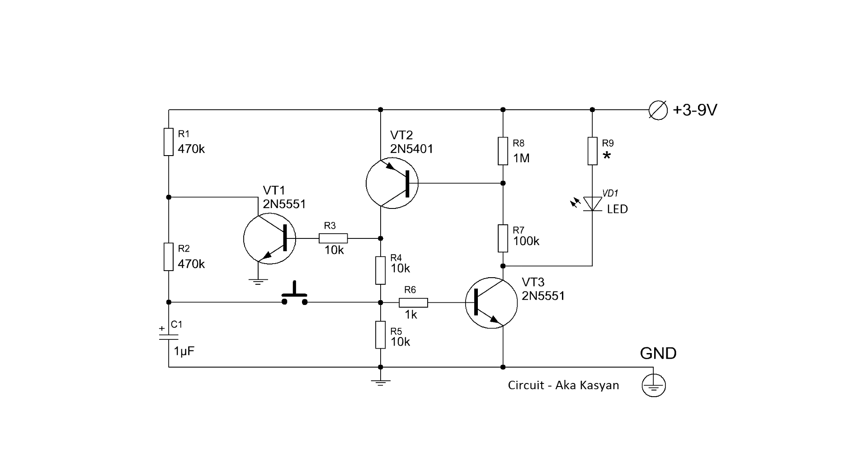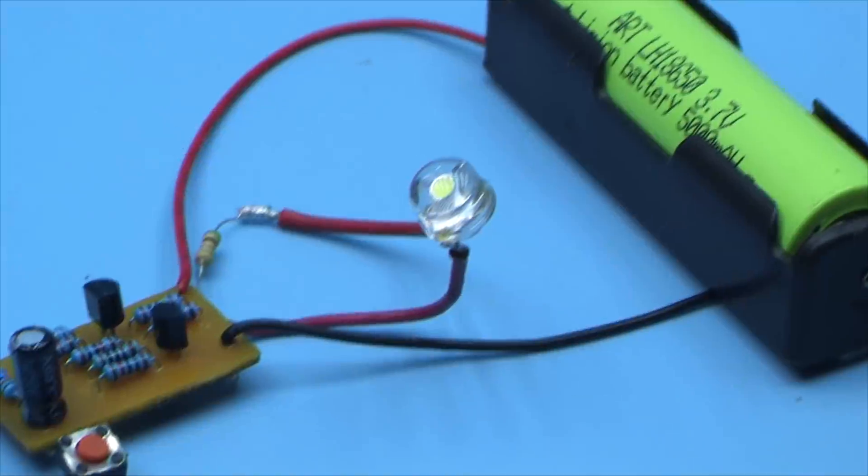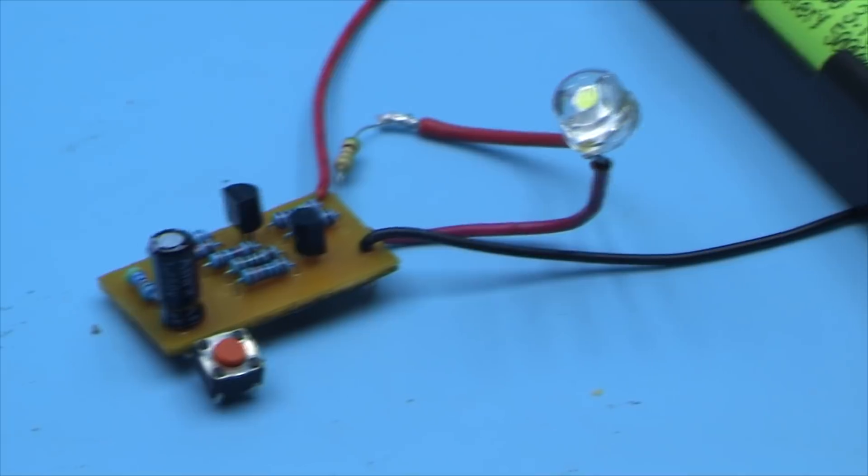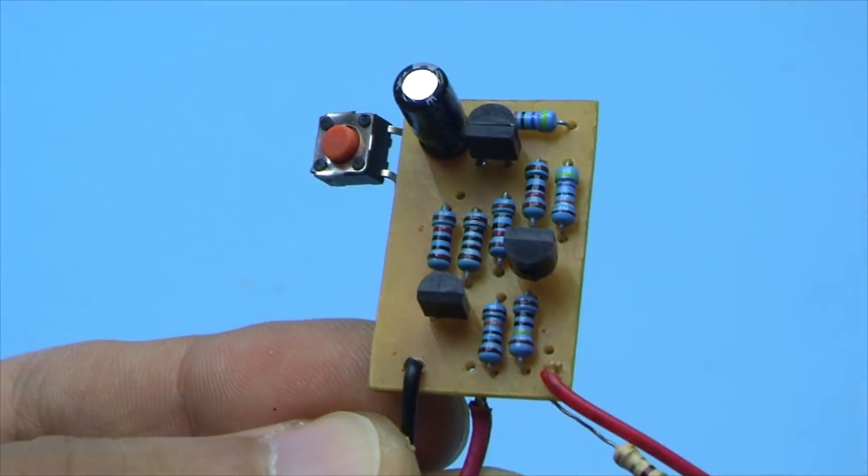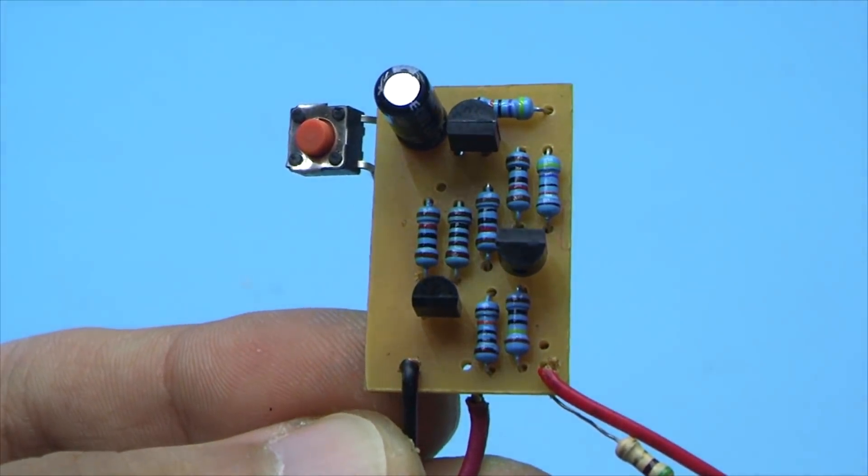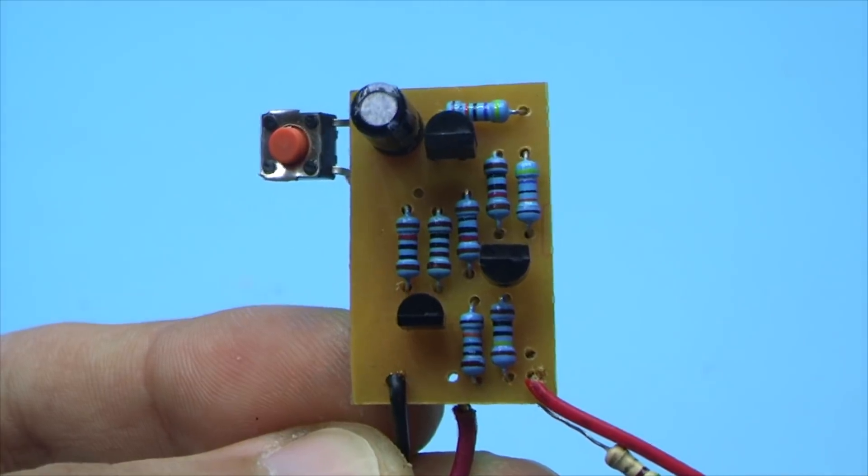The transistors used in the circuit aren't critical. You can take any with small or average power of the corresponding conductivity. The nominal values of other components of the circuit can be deflected in both directions by 30%.